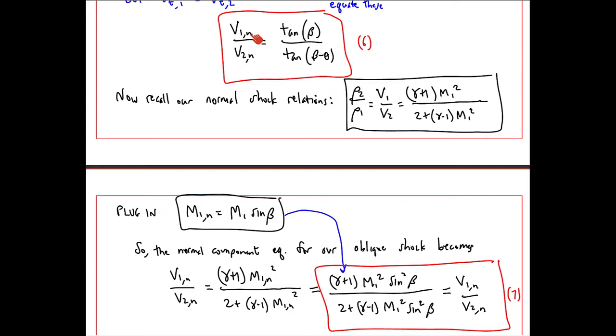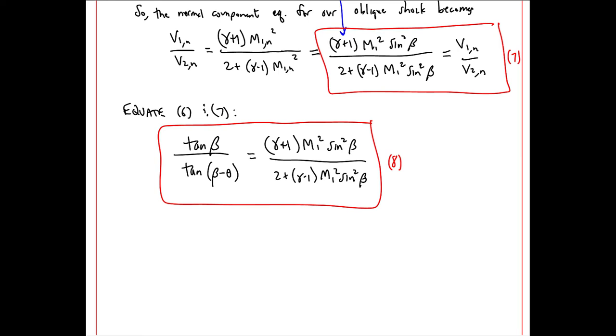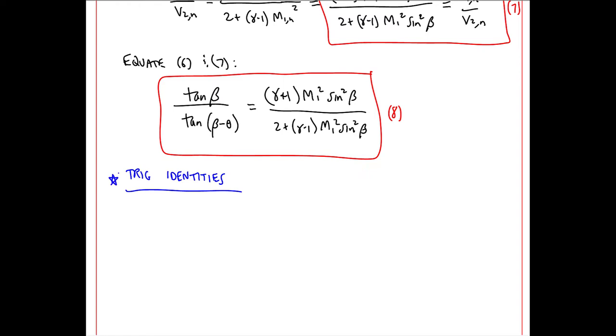Now we have two equations for this ratio, V1N over V2N, equation 6 and equation 7. So let's equate them. And we get this, which I'll call equation 8. This is our desired relationship between beta, theta, and M1. But we want to get it into a more useful form.